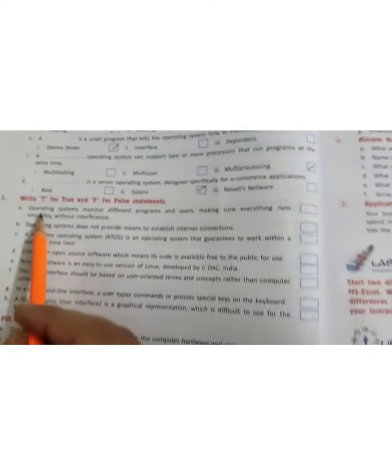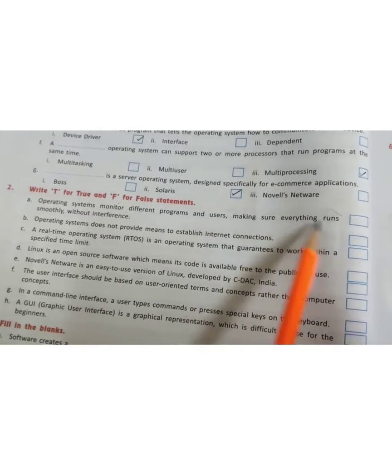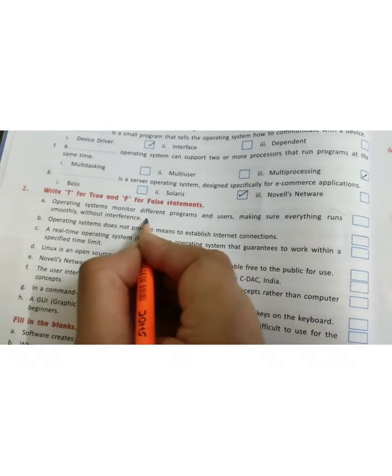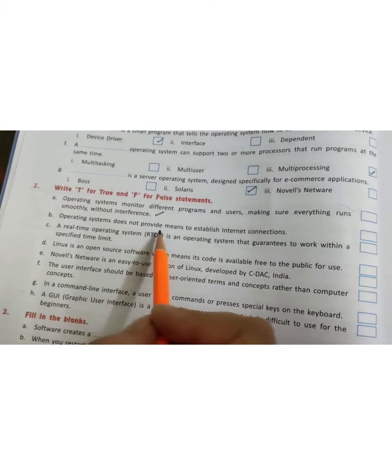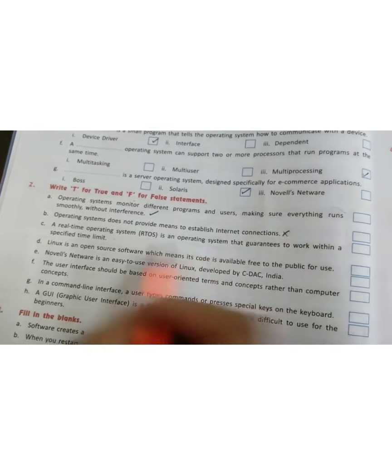Let's move to your true or false statements. The operating systems monitor different programs and users making sure everything runs smoothly without interference. That is true. Operating system does not provide means to establish internet connection. This is false.